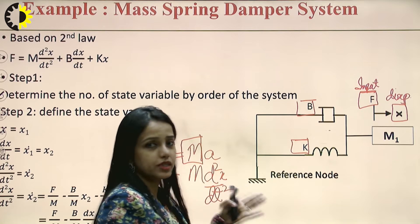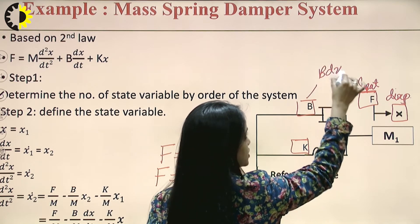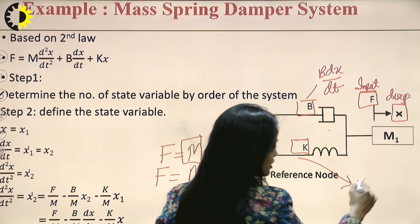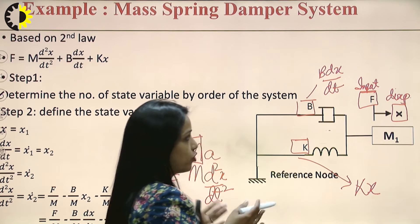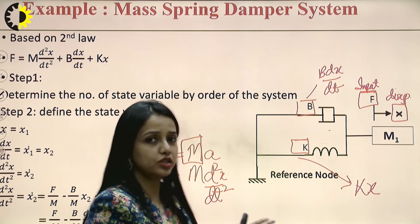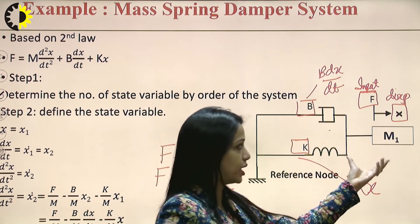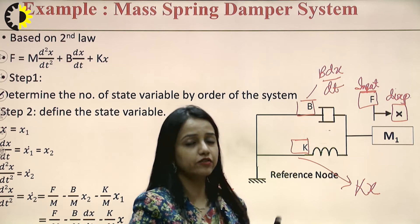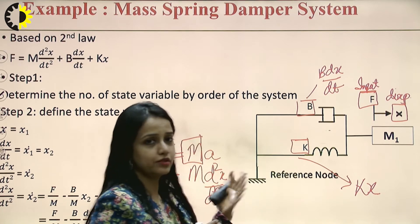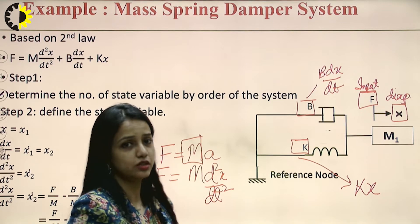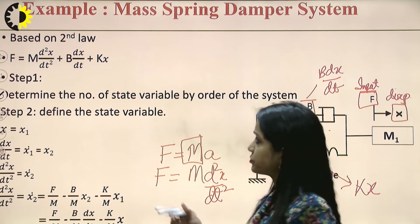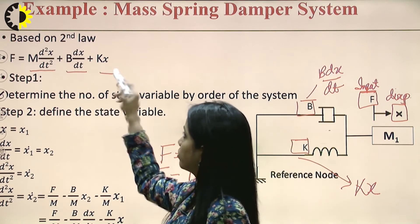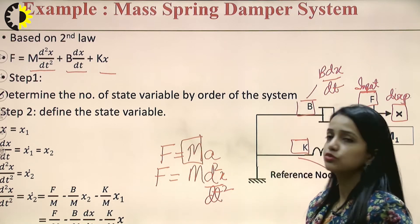Now let us consider the system also has a damper b and a spring constant k. The force component for damper b is b times the first derivative of displacement, and for the spring it is k times x. To see the total impact of force, we add the three components: the force on mass m, the force on damper b, and the force on spring k. We then arrange these components into a single equation.